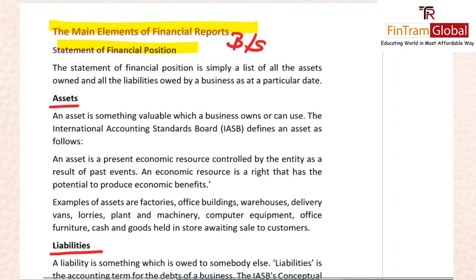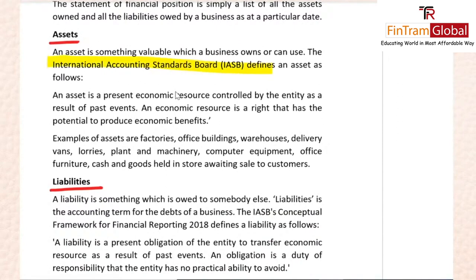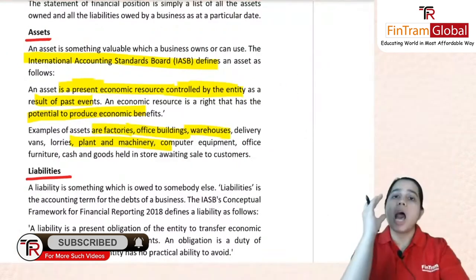The IASB — International Accounting Standards Board — definition of an asset is: a present economic resource controlled by the entity as a result of past events. An economic resource is basically a right that can generate potential economic benefits. Examples of assets include factories, buildings, warehouses, plant, and machinery. All of these are business assets you can see on the asset side of the balance sheet.